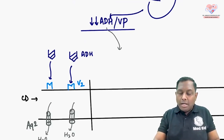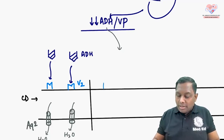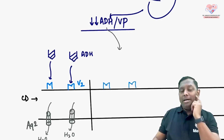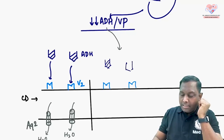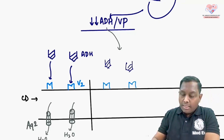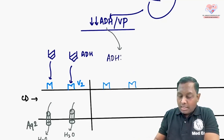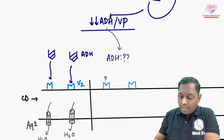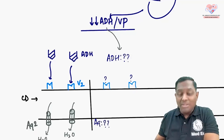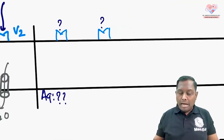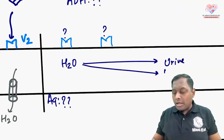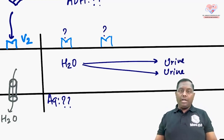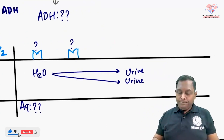Now in this scenario where ADH level is already very less, the V2 receptors are waiting — waiting for vasopressin — but vasopressin is not coming because ADH is low. With no vasopressin stimulating them, aquaporins will not move to the surface. No aquaporins means water will not be reabsorbed and will be lost in the urine, leading to a condition called polyuria.